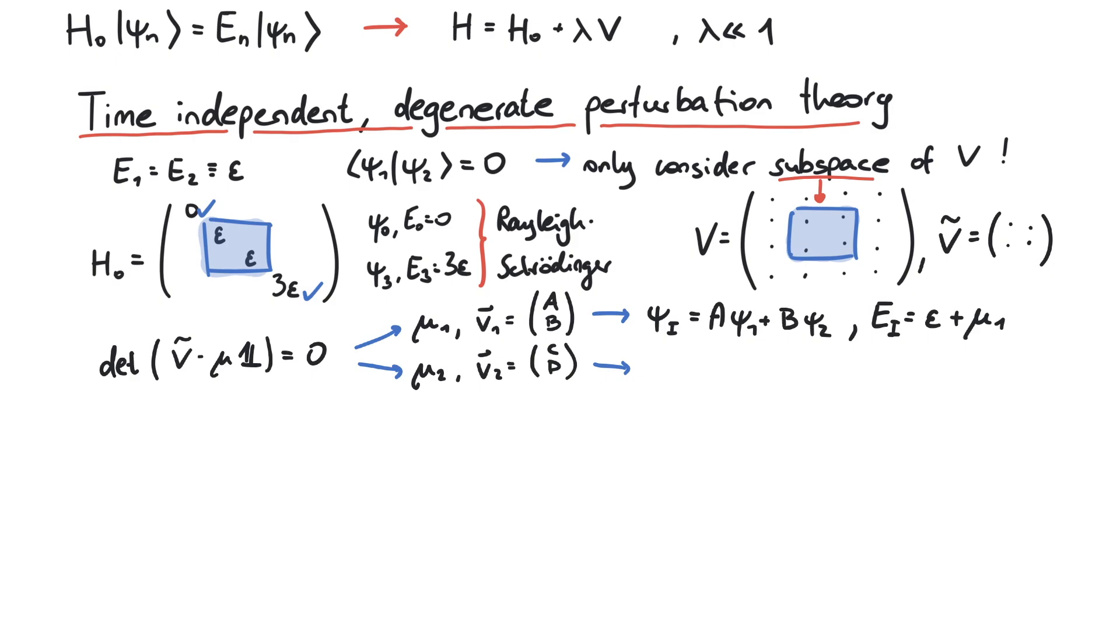The other eigenvector can be used in the same way to construct psi2, which is given by c times psi1 plus d times psi2. And the corresponding eigenvalue is the first order correction to epsilon. Here we clearly see that due to the potential v, our energies are not degenerate anymore.